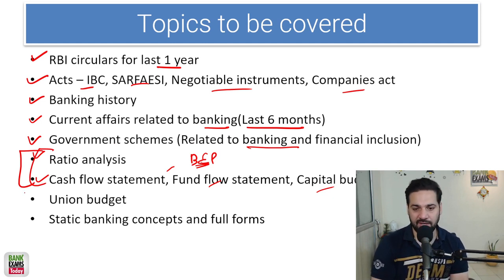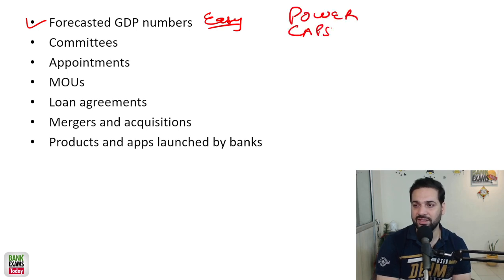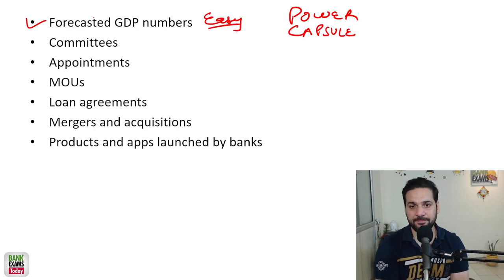Union budget, static banking concepts and the full forms. Forecasted GDP numbers. We make the table, just go through the power capsule that we have provided in the course. Power capsule you will see committees, appointments, MOUs, loan agreements, mergers and acquisitions, products and apps launched by the banks.